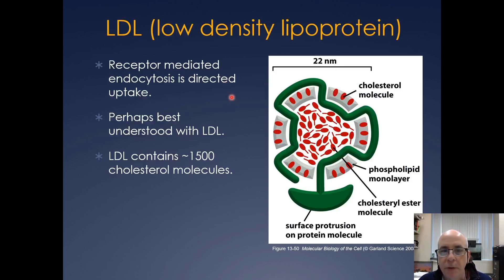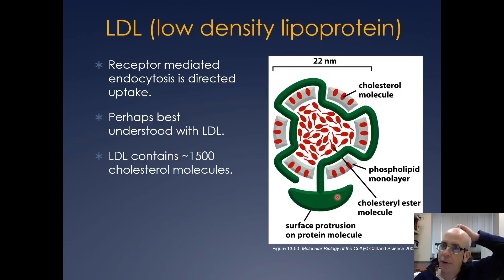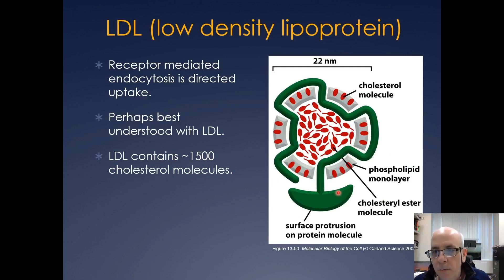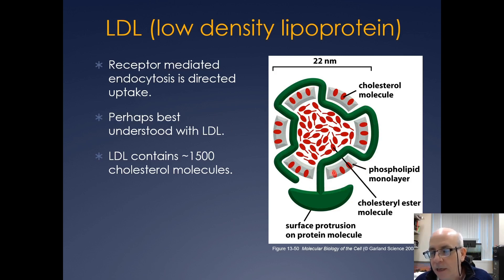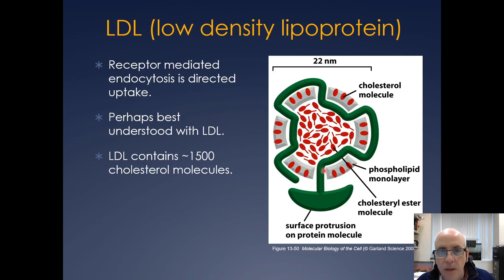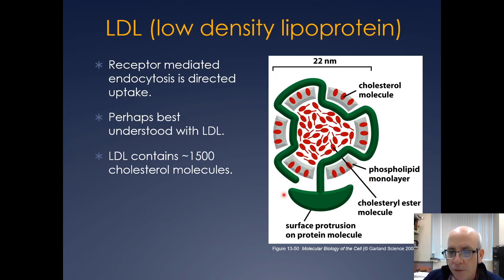For receptor-mediated endocytosis, we're going to cover the low-density lipoprotein, LDL. It's a well-characterized system — anybody with high cholesterol has a lot of this LDL floating around in their bloodstream because they have a defect in their cell's ability to take up LDL. The LDL receptor pathway is one of the best understood precisely because high cholesterol is such a significant problem. The low-density lipoprotein actually contains about 1,500 cholesterol molecules.